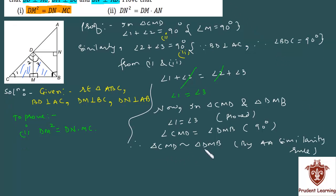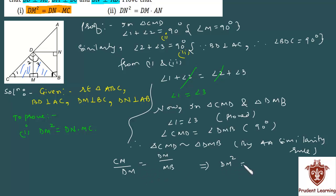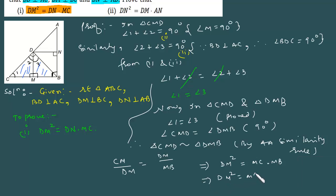Since corresponding sides of similar triangles are proportional, we get CM over DM equals DM over MB. Cross-multiplying gives DM squared equals CM multiplied by MB. Now observe that DNBM is a rectangle because all its angles are 90 degrees, so opposite sides are equal: MB equals DN. Therefore, DM squared equals MC multiplied by DN. This completes the first part.